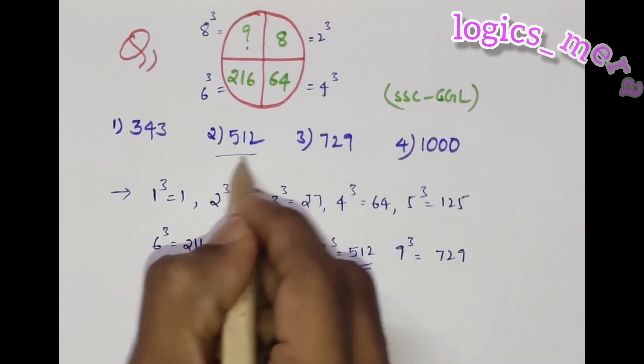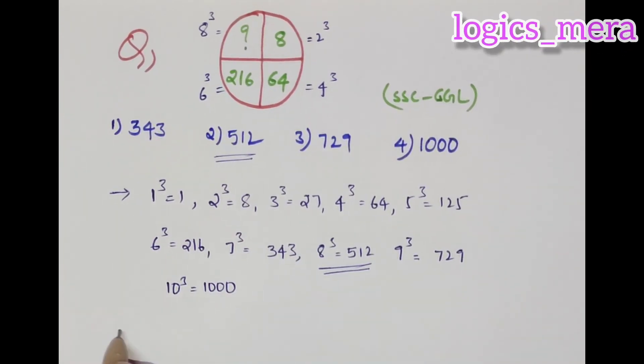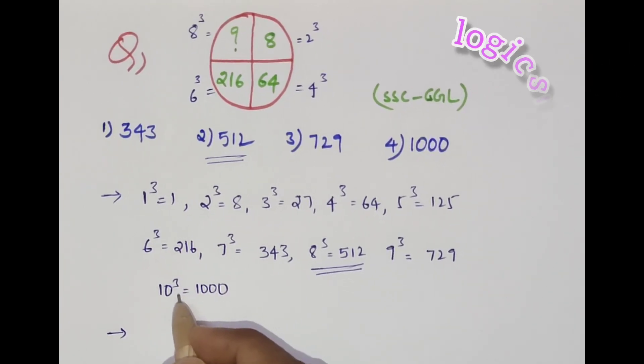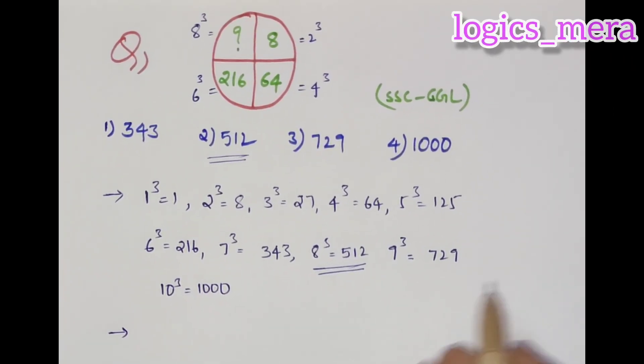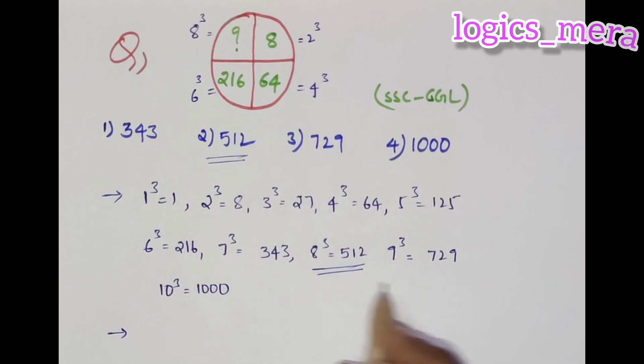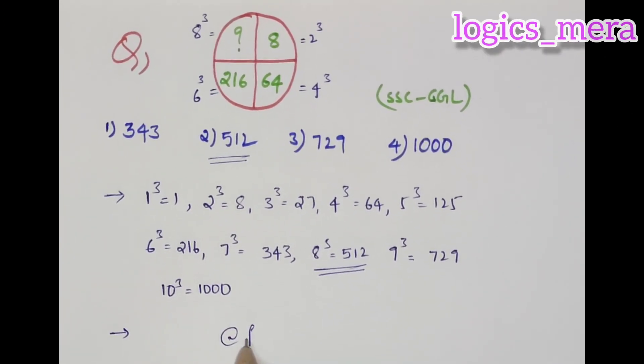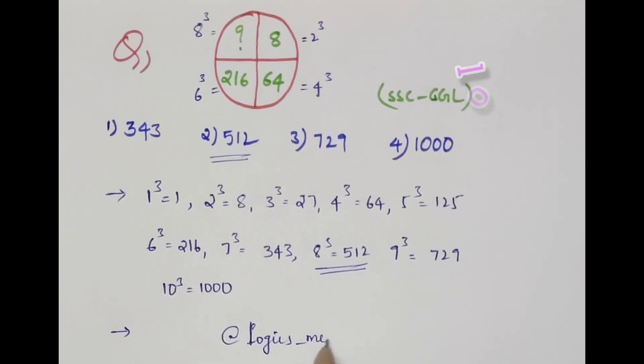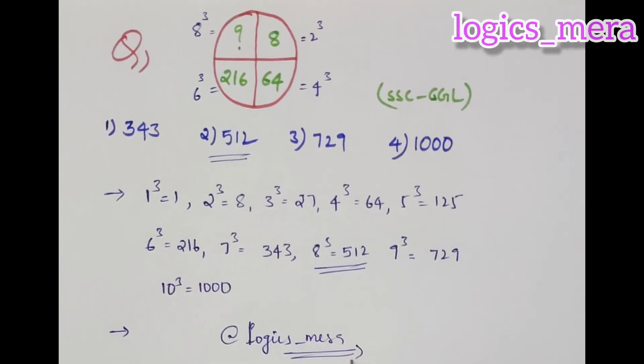Eight cube, you know the answer, that is five hundred and twelve. So you should know the squares and cubes of first ten natural numbers at any cost.